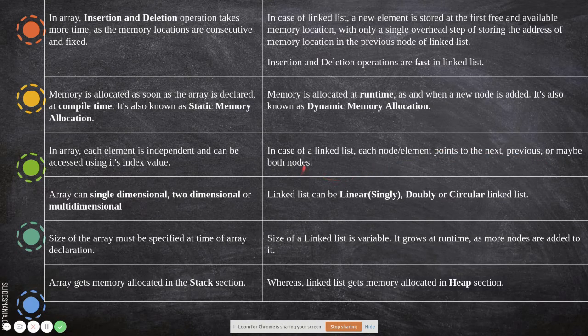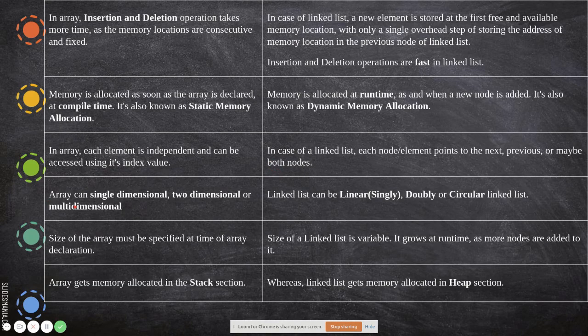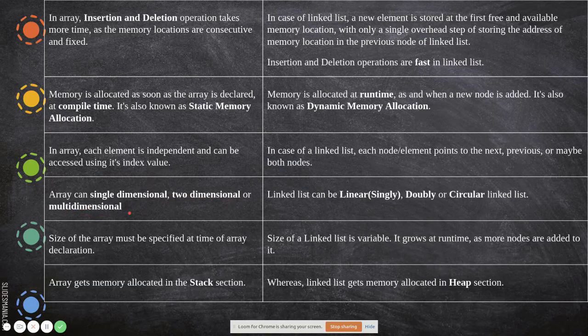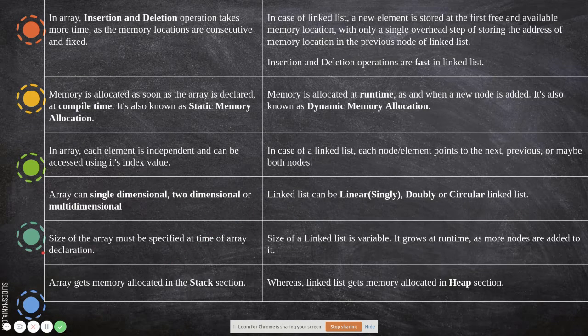Array can be single dimensional, two dimensional, or multidimensional. A linked list can be linear, doubly, or circular linked list. Size of the array must be specified at time of array declaration. Here, size of a linked list is variable. It grows at runtime as more nodes are added to it.